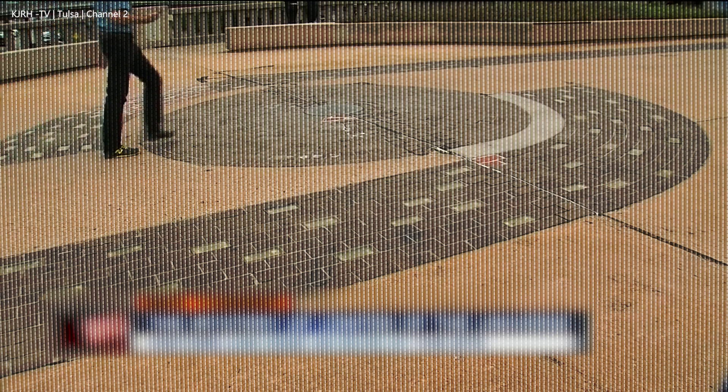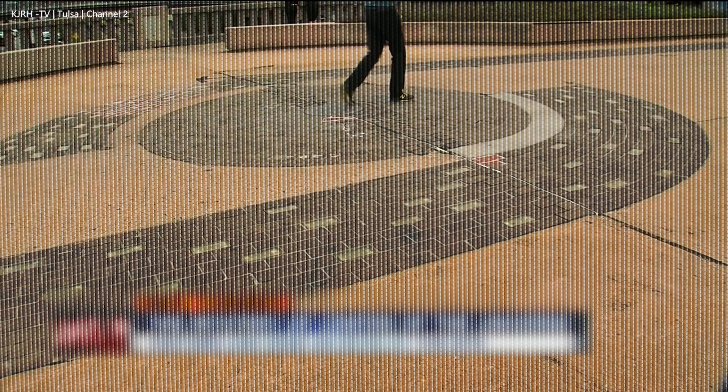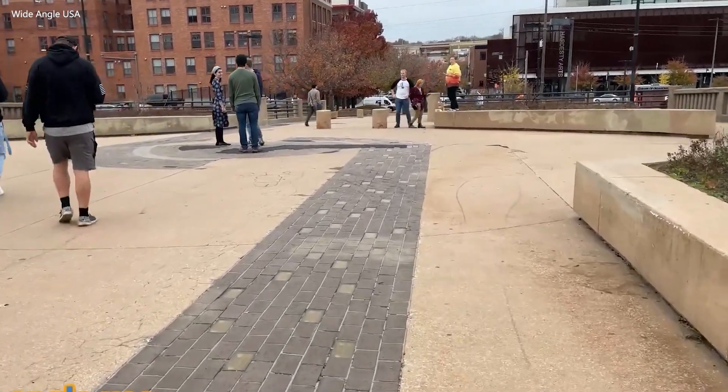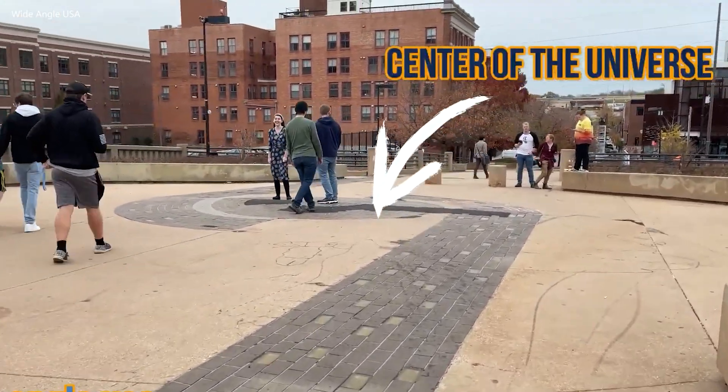If you ever visit downtown Tulsa, Oklahoma, you might come across this inconspicuous spot marked by a small concrete circle in the middle of a larger circle of bricks. It might not look like much, but that spot right there is an anomaly that the friendly locals have dubbed the center of the universe.